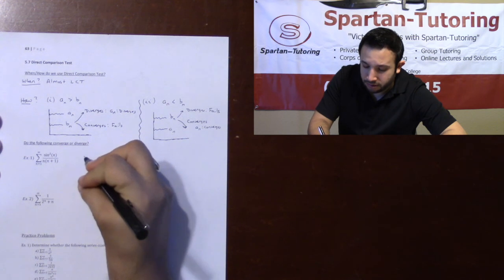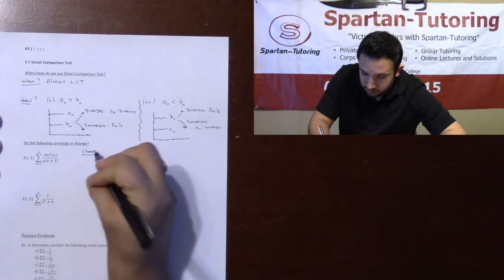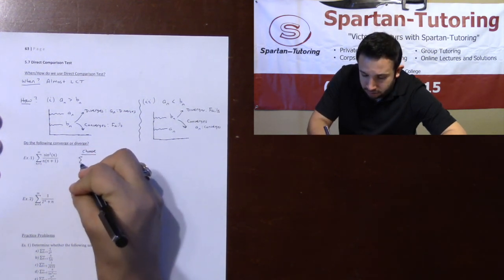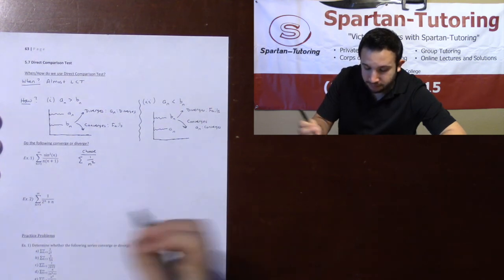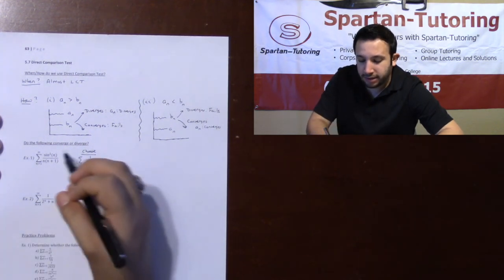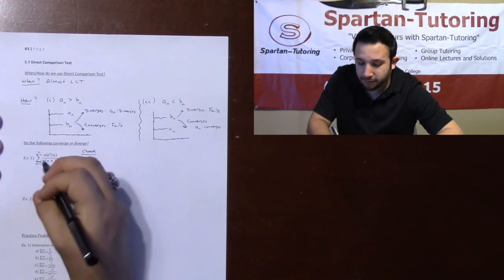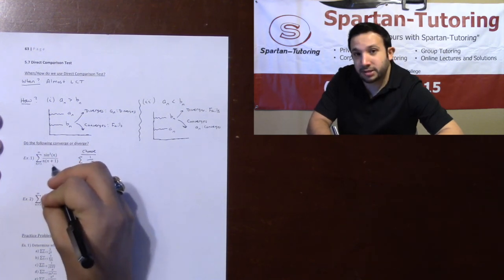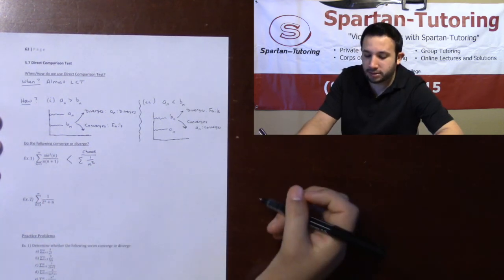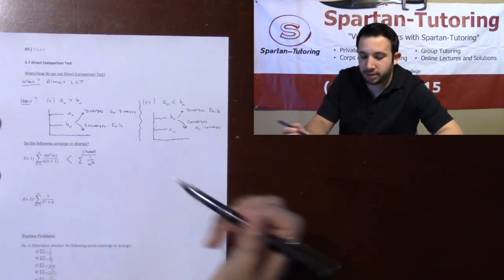For number one, I have sine squared over N times (N plus one). I'm going to choose one over N squared, because the highest power on the bottom is N squared. Now, one is always greater than or equal to sine squared. Also, since you're adding stuff on the bottom — N squared plus N — it gets smaller. So I know for a fact that one over N squared is definitely bigger than sine squared over N times (N plus one).